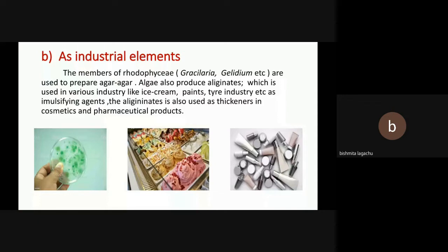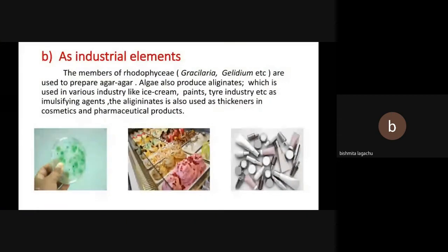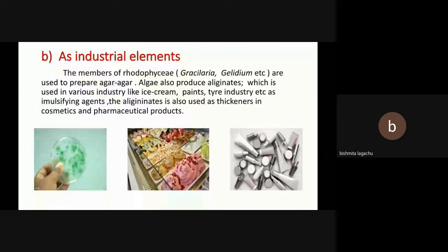Algae also produce alginic acid which is used in various industries like ice cream, paints, tire industry, etc. as an emulsifying agent and in pharmaceutical or cosmetic products for thickness.